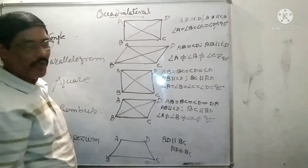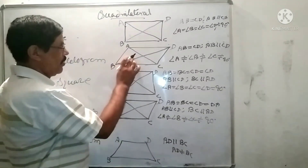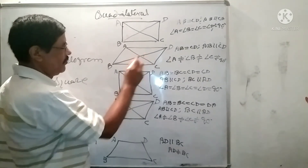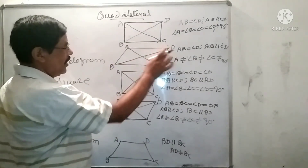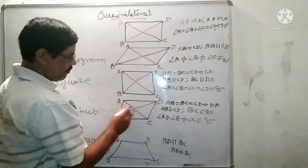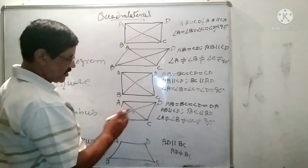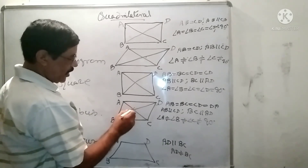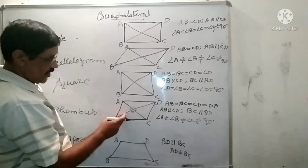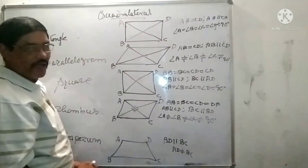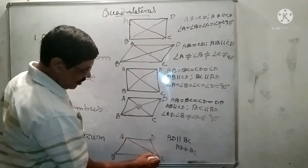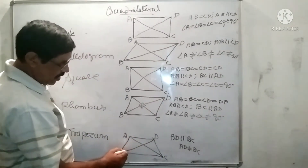In case of parallelogram and rhombus, their diagonals are not equal. But remember, in a parallelogram, the diagonals bisect each other — meaning BO equals OD. In case of rhombus also, the diagonals bisect each other. Additionally, in a rhombus the diagonals bisect each other perpendicularly, meaning at 90 degrees. In case of trapezium, the diagonals may or may not be equal.